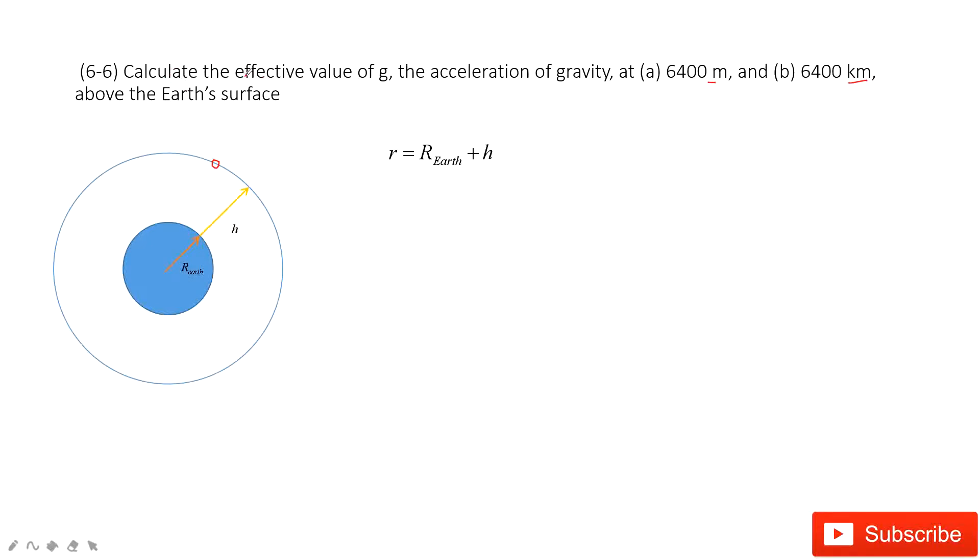Then we look at how we can find the effective value of g. We consider the model. How can we decide the g at the surface of the Earth? We consider universal gravitation force equals mass times acceleration.